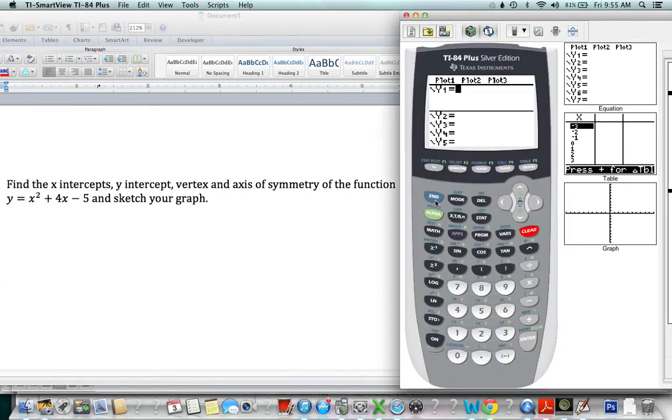Okay, so in the TI-84, let's quit out of this so we're doing it from scratch. What you'd want to do is graph your equation. So you want to go to y equals, and then type the equation that we have there. So we have x squared plus 4x minus 5.